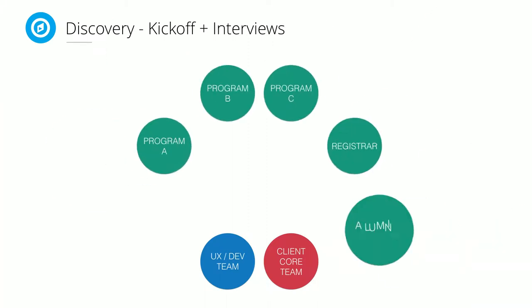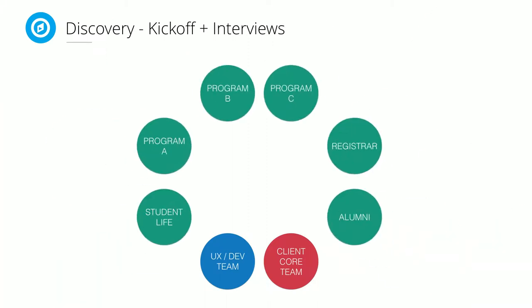We then had about six other stakeholders, each representing one of the different programs or offices involved in the website — one or two people representing the interest of each particular program or group. We'd have weekly meetings with the core team and then every two to four weeks with the larger group.